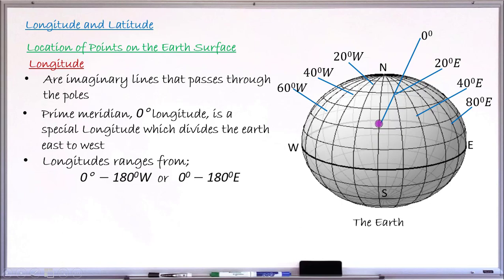Similarly, longitudes to the left of the prime meridian will be western. The first one could be 20 degrees west, another could be 40 degrees west. As you move away from the prime meridian the angle keeps increasing up to a maximum of 180 degrees. This 180-degree longitude, either west or east, completes a cycle together with the prime meridian — the longitude at the back of the prime meridian is either 180 degrees east or 180 degrees west.